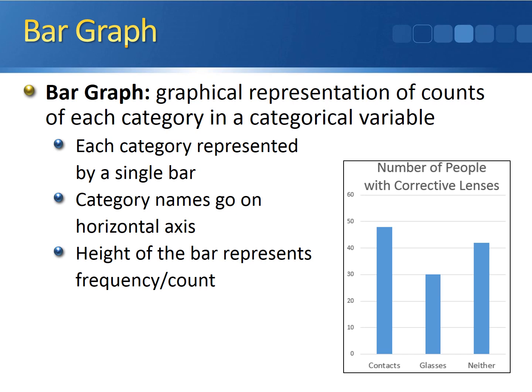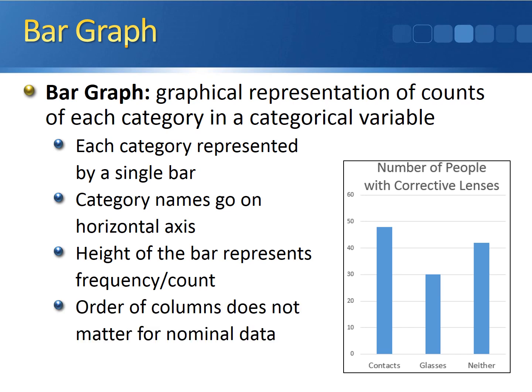The contacts bar height is around 48, between 40 and 50 but much closer to 50. The glasses bar goes up to exactly 30, and the neither bar sits between 40 and 50, closer to 40, representing a count of 42. For a nominal variable, the order of columns doesn't matter — you can arrange categories alphabetically, highest to lowest, or lowest to highest frequency. This is not the case for an ordinal variable.